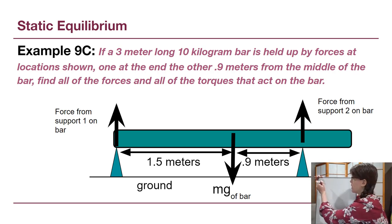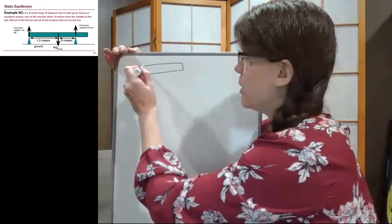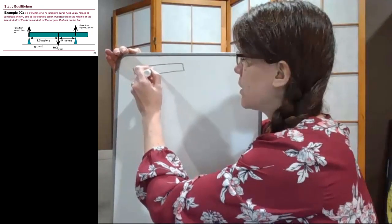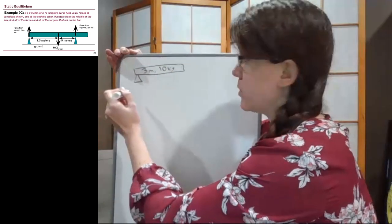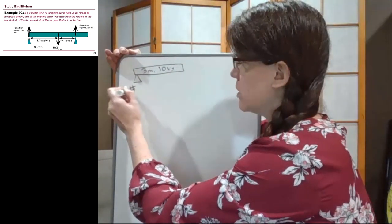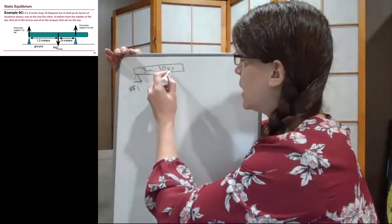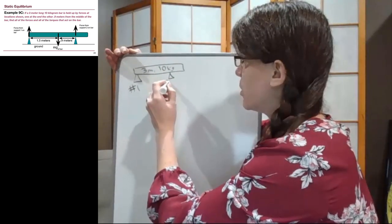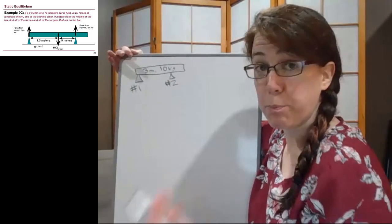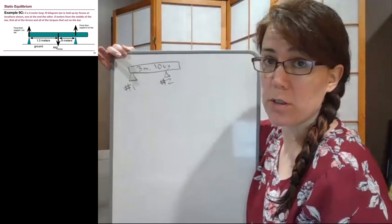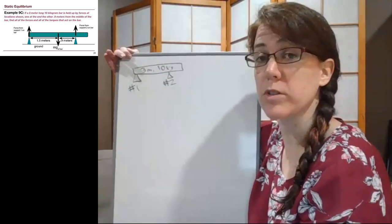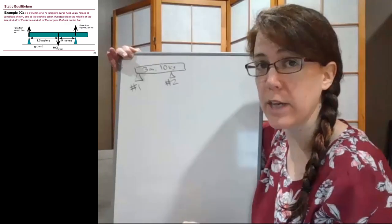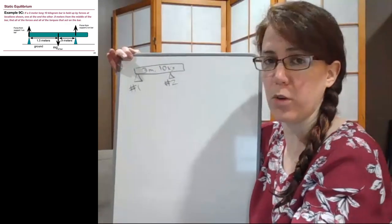And so that process starts with drawing a picture of the situation where we have a three meter long 10 kilogram bar, and there's a support on the far left, we'll call that support number one, and there's a support not at the end, and that is support number two. We've got big bold arrows on our slide. We aren't going to draw those in this picture because they aren't physically there, but we will see those arrows show up in the force diagram and in the torque diagram.